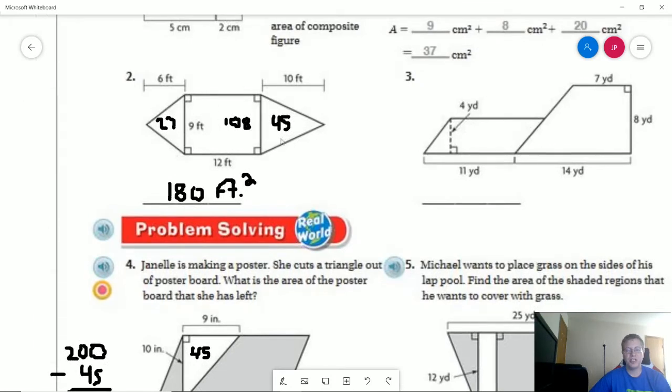So number two, we are working with this shape. We can get the area for the inside part by doing 9 times 12, which is 108. This one we're going to be doing 9, or one half times 9 times 6. So half of the base times the height.